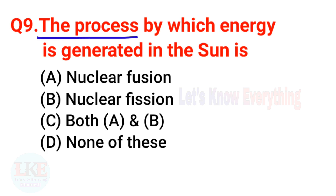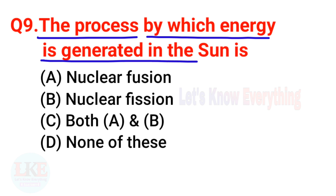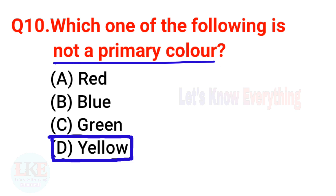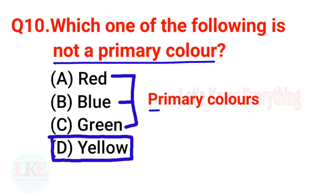Question 9: The process by which energy is generated in the sun is nuclear fusion. Question 10: Which of the following is not a primary color? The right answer is option D — yellow. Yellow is not a primary color; red, blue, and green are the three primary colors.